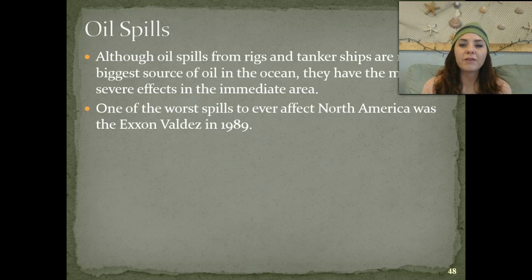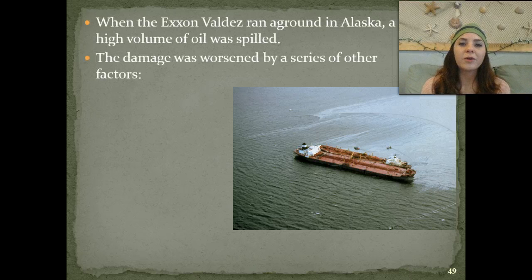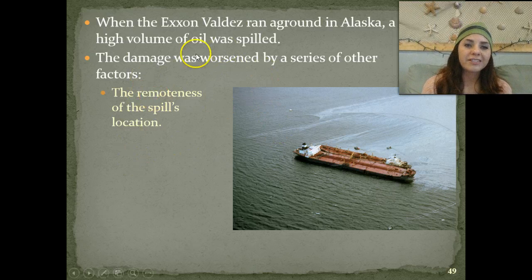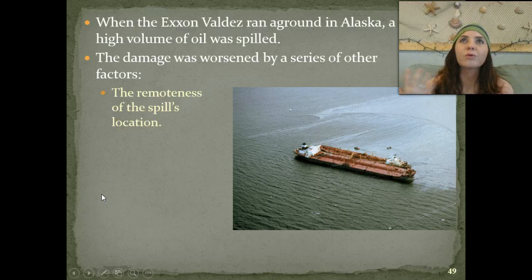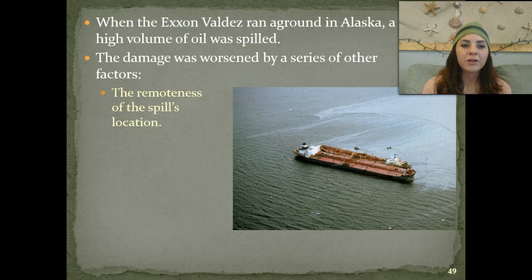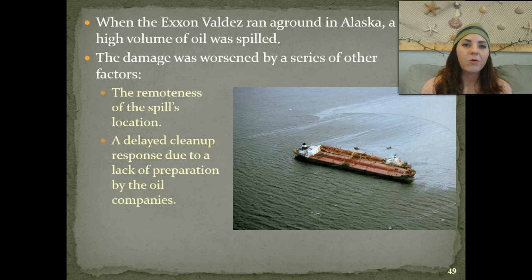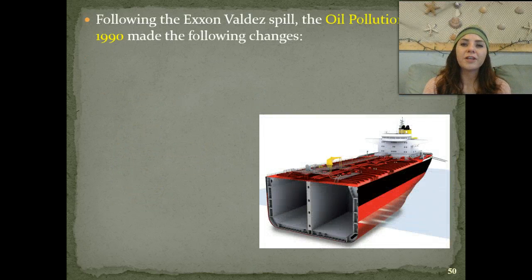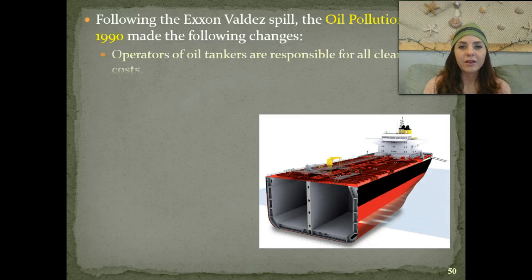One of the worst spills that ever happened in North America was the Exxon Valdez, and that happened in 1989. When the Exxon Valdez ran aground in Alaska, a very large volume of oil was spilled, and the damage was worsened by a series of other factors. It was very remote, so there weren't many people around to begin cleaning up the oil spill. This caused a delayed cleanup response due to the lack of preparation by the oil companies—they didn't really have a team ready to deploy if an oil spill occurred.